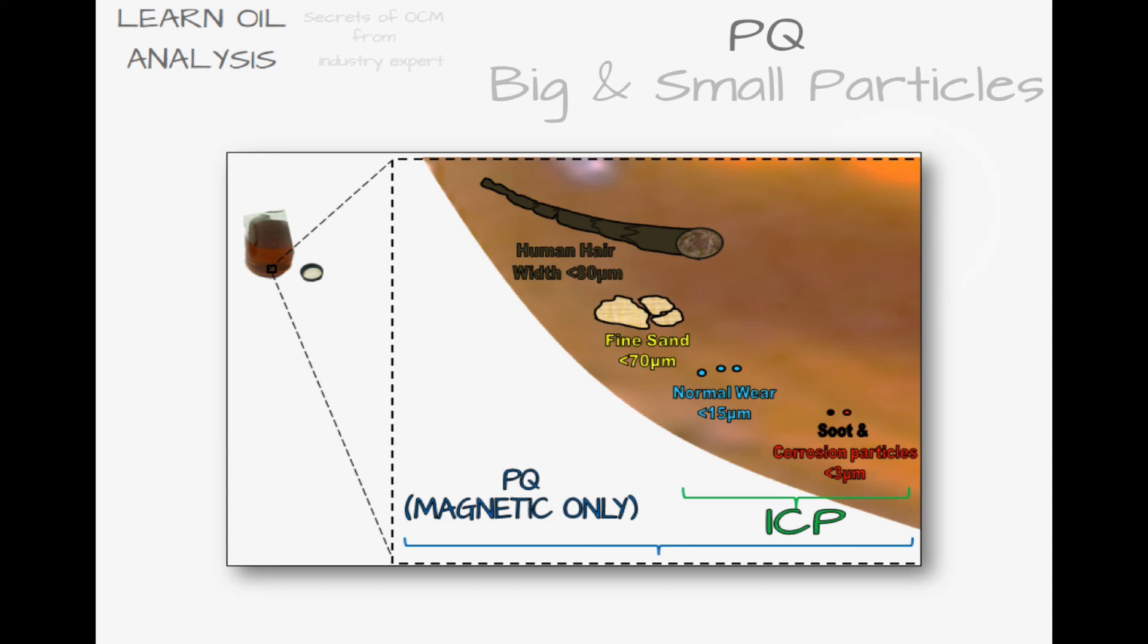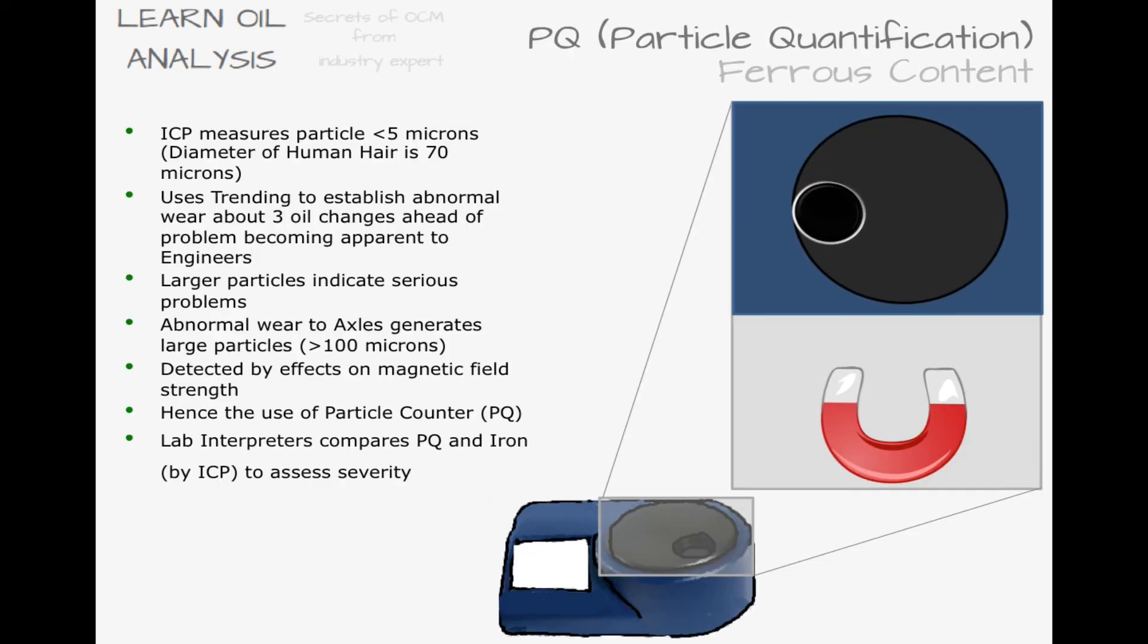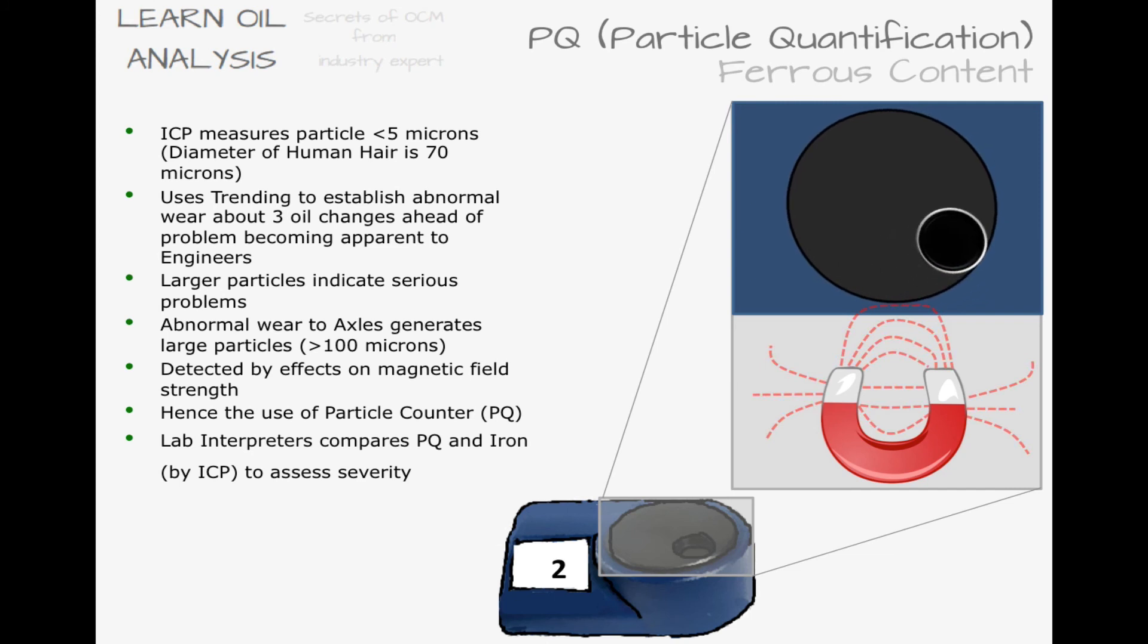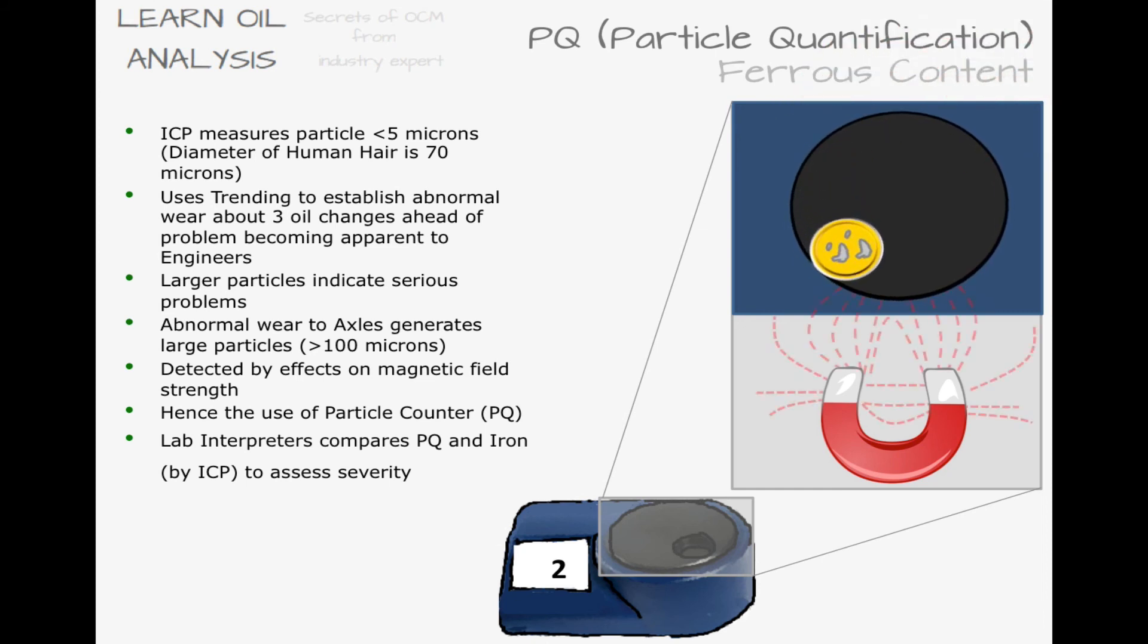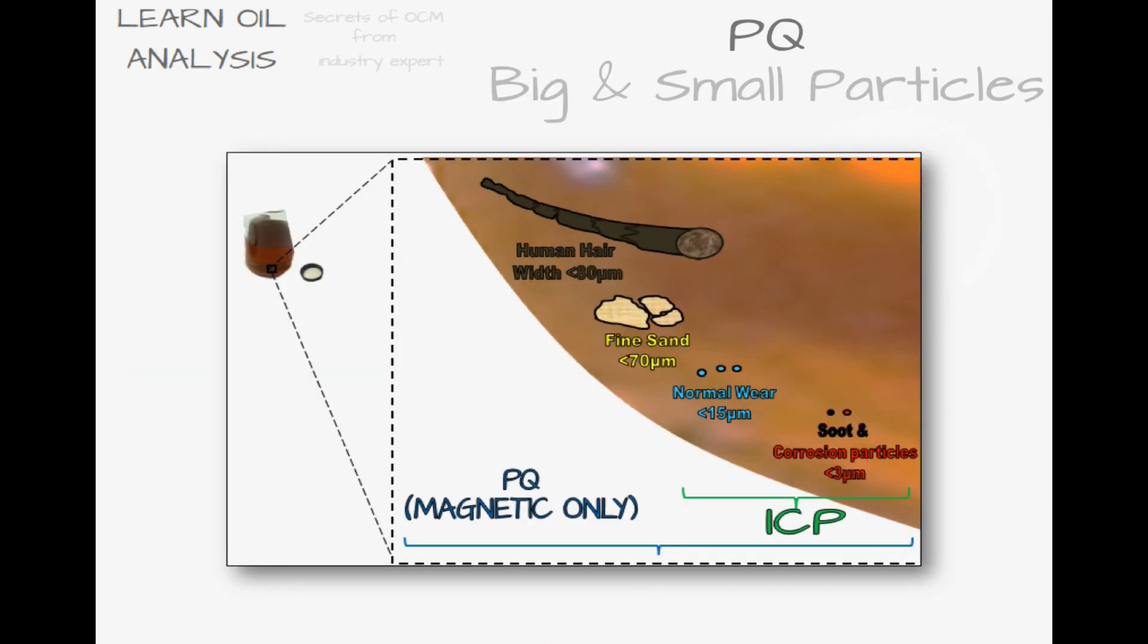PQ on the other hand is a unitless measure of ferrous particles in the sample. The test works by sample cup or bottle rotating through a magnetic field and the disruption to the magnetic field is measured. In the first spin we can see there is very little disruption to the magnetic field and this could be simply background magnetism to give a reading above zero. When we add a sample with a very high ferrous content it causes a high PQ reading as it disrupts the field. PQ does not only measure small particles but large particles too so it is an excellent complement to ICP to measure small and big particles.